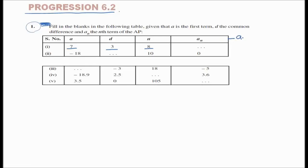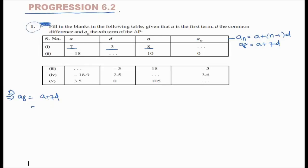The formula is: an = a + (n-1) × d. So a8 = a + 7d. Here a means 7, plus 7 into d means 3, so 7 + 21 = 28. The answer is a8 = 28.